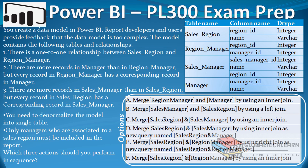The model contains four tables: Sales Region, Region Manager, Sales Manager, and Manager. The relationships are: one-to-one between Sales Region and Region Manager; more records in Manager than in Region Manager, but every record in Region Manager has a corresponding record in Manager; and more records in Sales Manager than in Sales Region, but every record in Sales Region has a corresponding record in Sales Manager. You need to denormalize the model into a single table, and only managers associated to a sales region must be included.